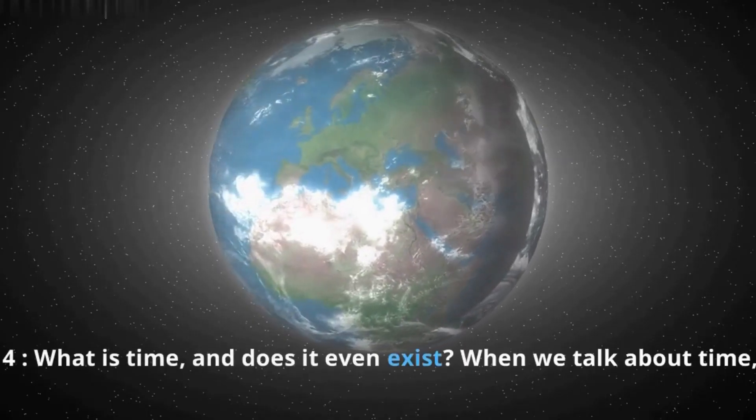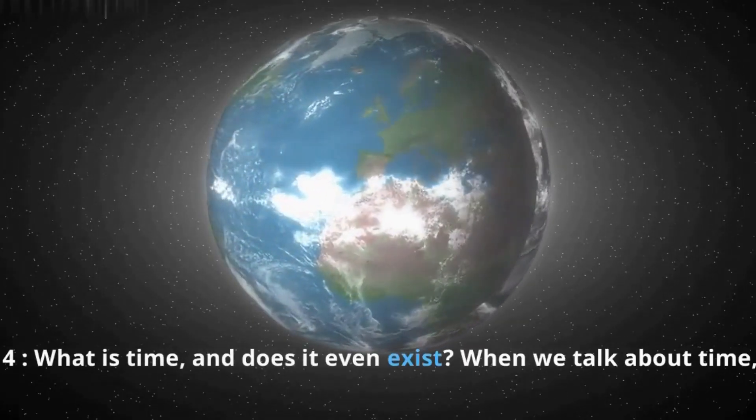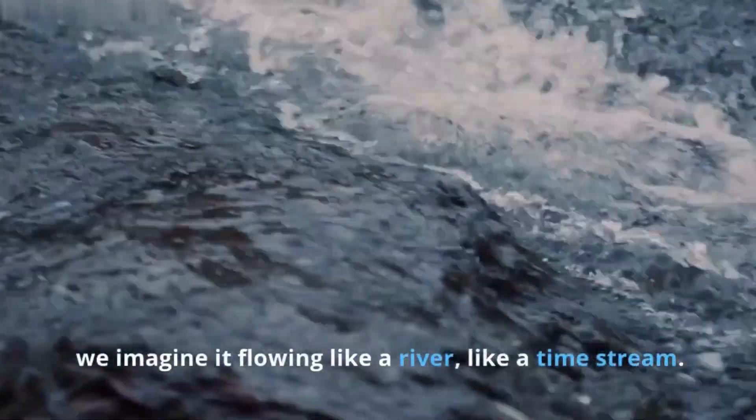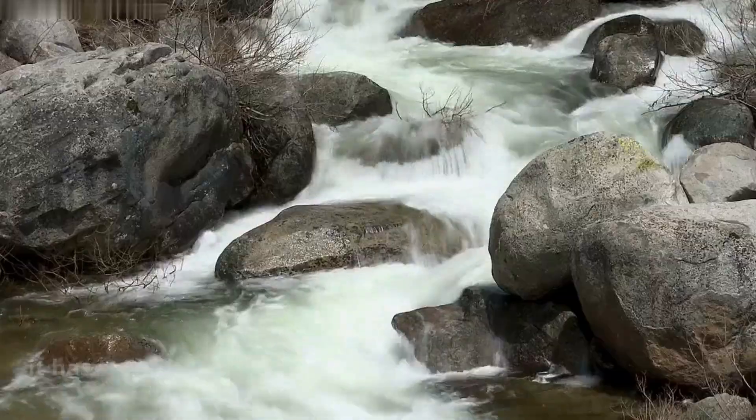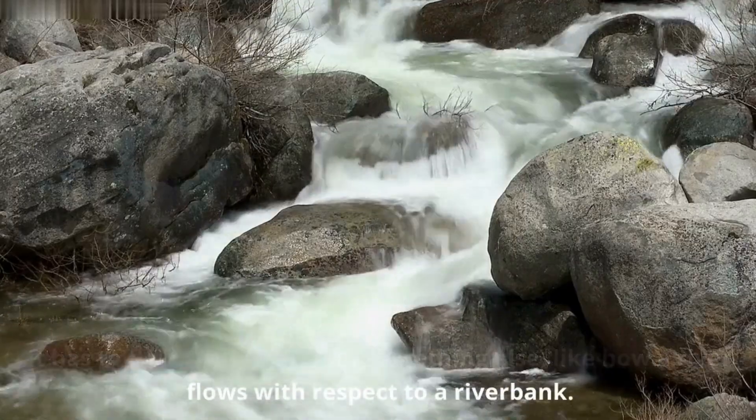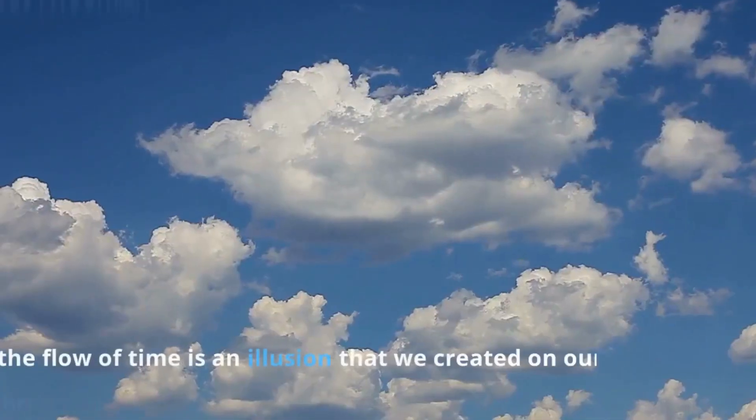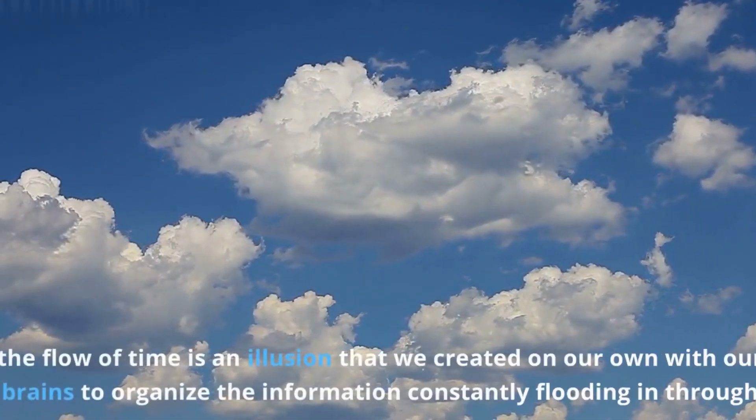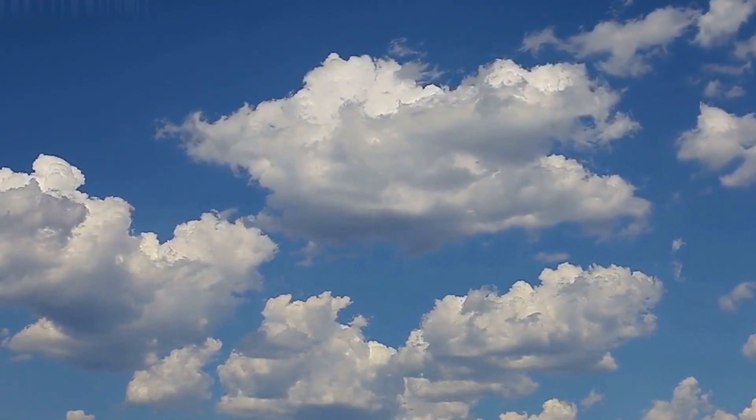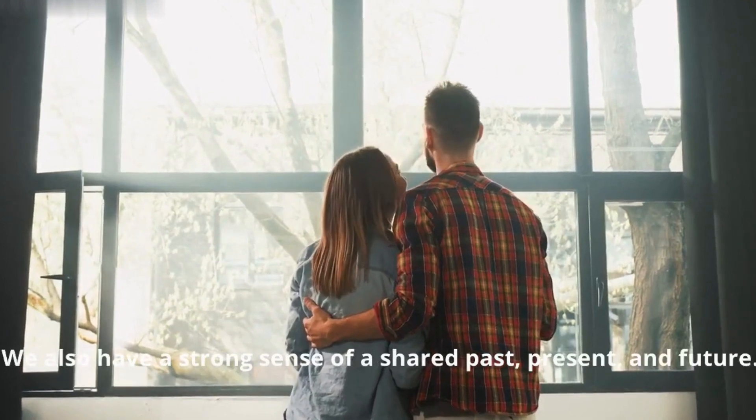Number 4. What is time, and does it even exist? When we talk about time, we imagine it flowing like a river, like a time stream. But for something to flow, by definition, it has to flow with respect to something else, like how a river flows with respect to a riverbank. The flow of time is an illusion that we created on our own with our brains to organize the information constantly flooding in through our senses. We also have a strong sense of a shared past, present, and future.